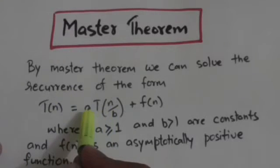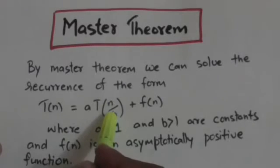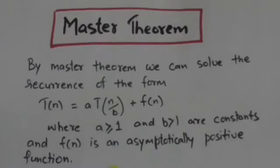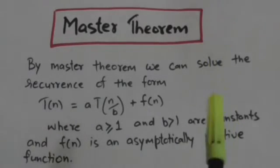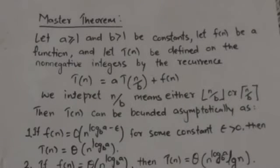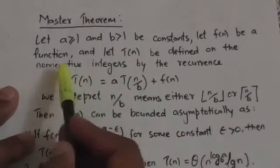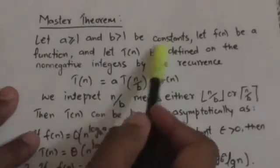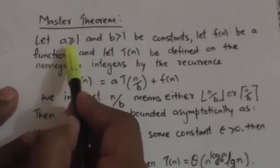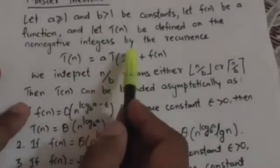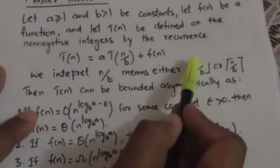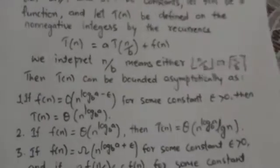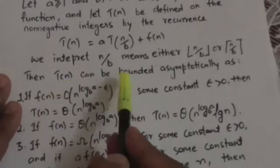The problem is divided into a sub-problems each of size n/b, where a is greater than or equal to 1 and b is greater than 1. Now, suppose T(n) is defined on the non-negative integers by the recurrence T(n) = a·T(n/b) + f(n). Here we interpret n/b as either floor(n/b) or ceiling(n/b). Master theorem has three cases to bound T(n) asymptotically.